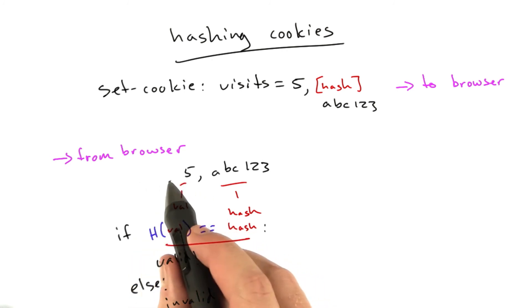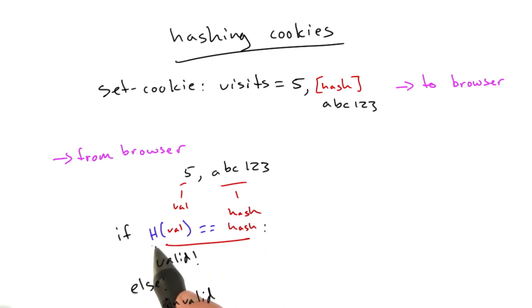We split apart the cookie value based on this comma into 2 parts, value and hash. And then we rehash the value, and if it matches the one we sent, we know that our cookie hasn't been tampered with.